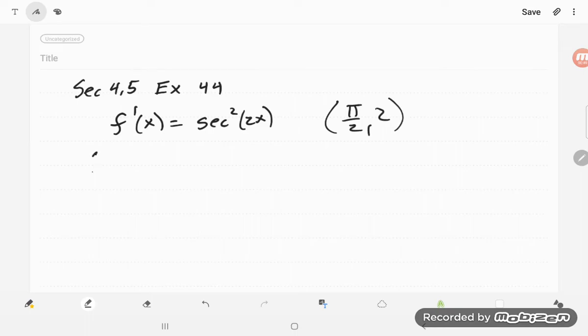So let's find that antiderivative of secant squared of 2x. Here, I want u to be 2x, so du is 2dx.